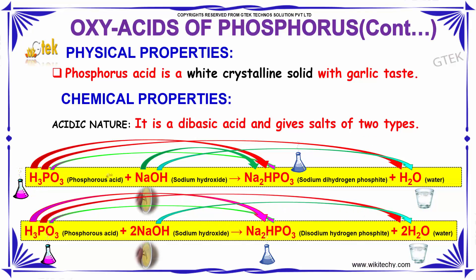Phosphorous Acid reacts with sodium hydroxide to form sodium dihydrogen phosphate, or it forms disodium hydrogen phosphate with water.